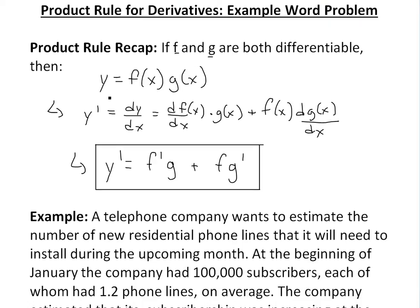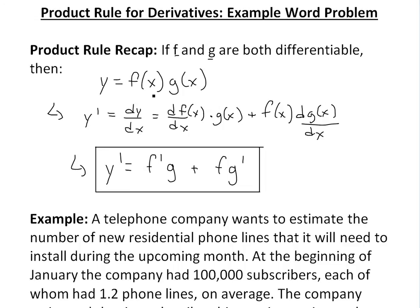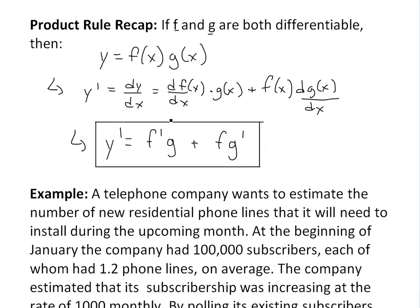Then the function y = f(x) times g(x), the derivative can be calculated as the derivative of f(x) times g(x) plus f(x) times the derivative of g(x). Or in other words, you could write it as y' = f'g + fg'. If you want to see the proof on this and further examples, make sure to look at the video links in the description below.